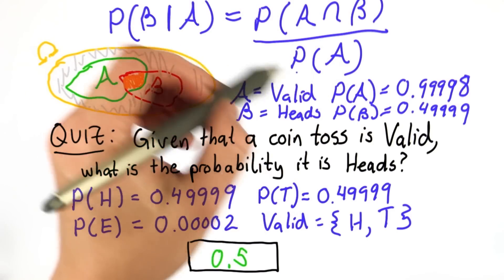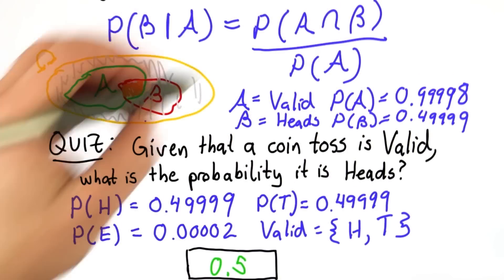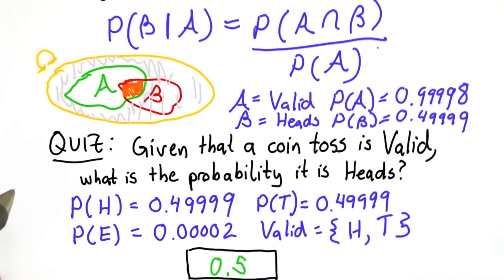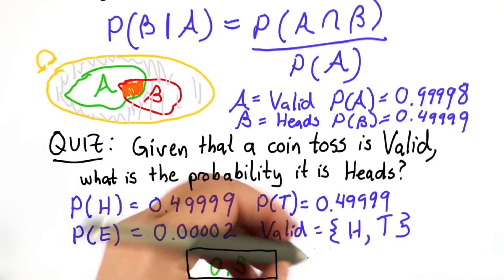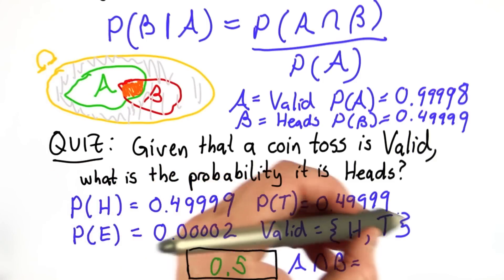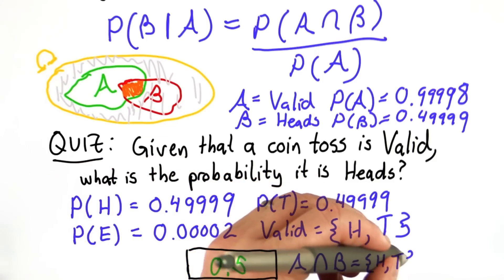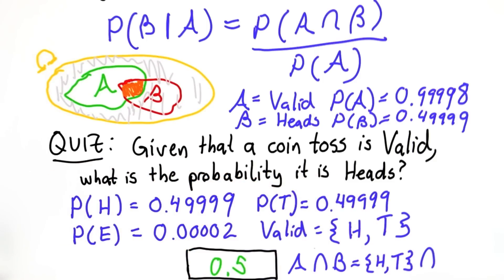Now we just have to plug these into the formula. But what we need to use the formula is the probability of A intersect B. What A is, the probability of A intersect B, well, what A is is valid, instead of heads and tails. What B is is heads.